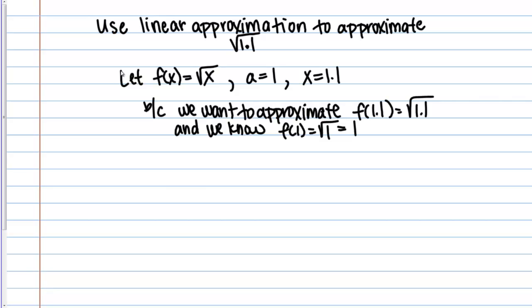What's our formula? Our linear approximation formula is L of X equals F of A plus F prime of A times X minus A. This is an approximation of F of X. What do we need to actually use this formula? We need F of A, which is just the function evaluated at A. We already know that. We need F prime of A. We're going to need to take the derivative of F of X. Let's go ahead and do that.